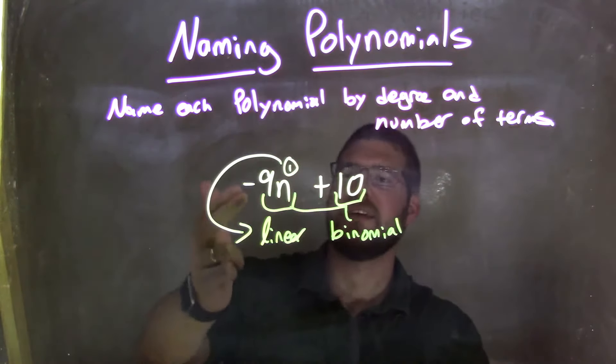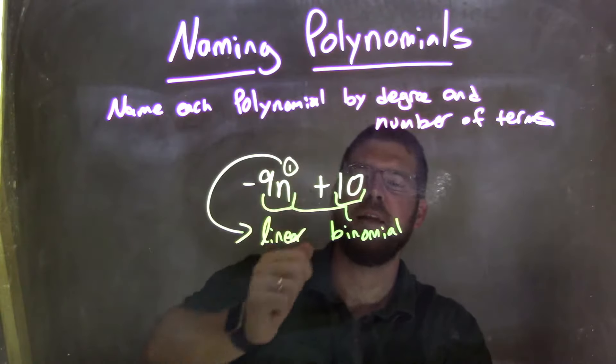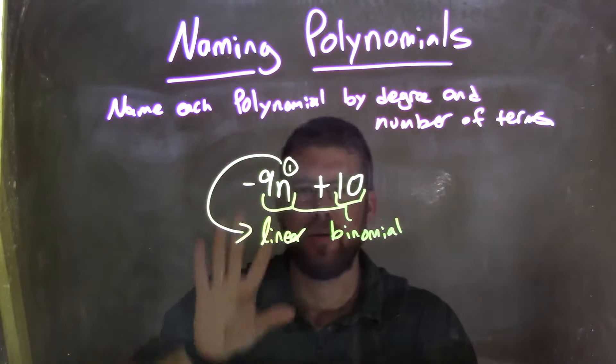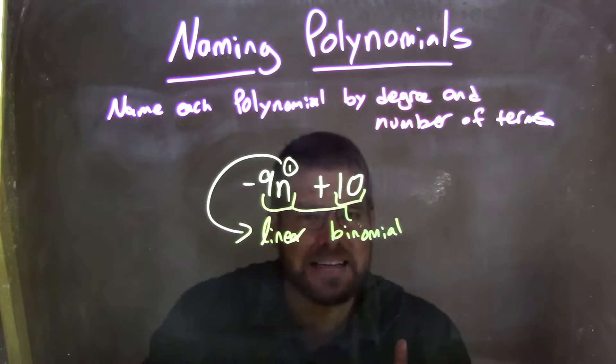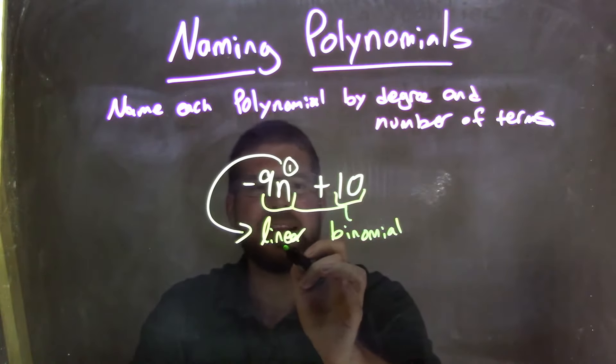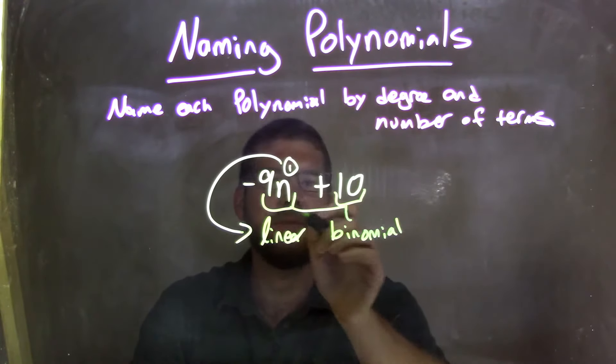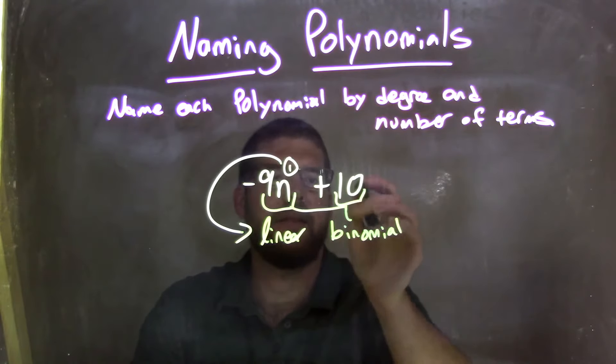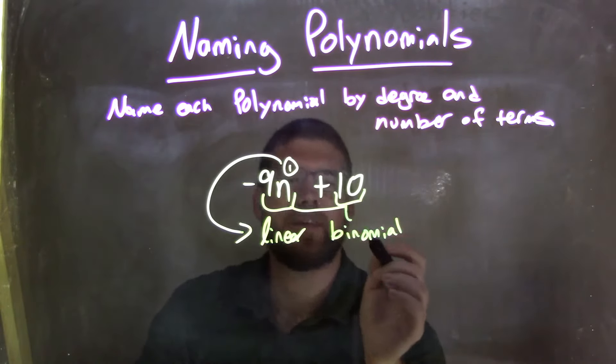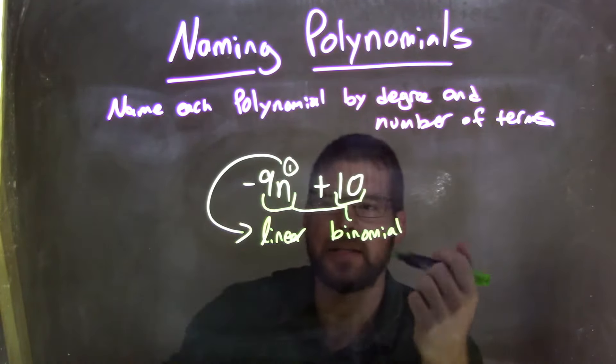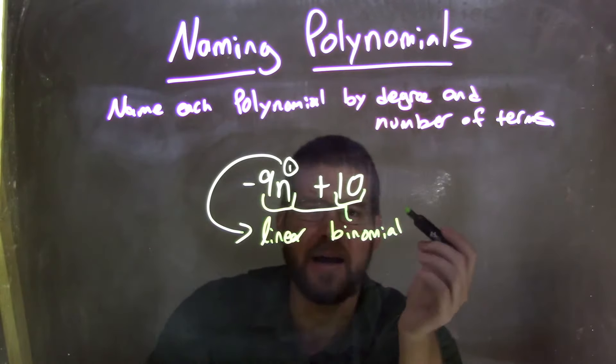Let's recap. We're given negative 9n plus 10, and it's related to that first power, that n to the first power. That's our highest degree. Highest degree is 1, making this linear. Now we have two terms here, the negative 9n and the 10. So we would call this a binomial. We combine the two together, giving us a linear binomial.